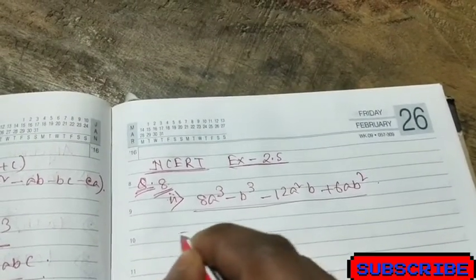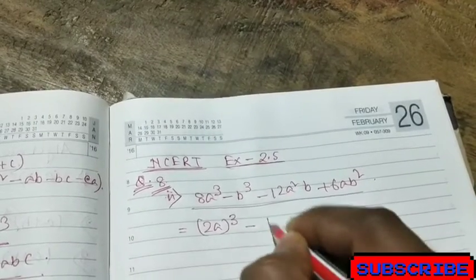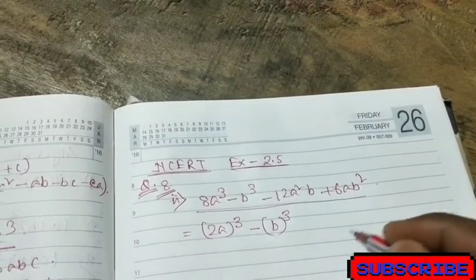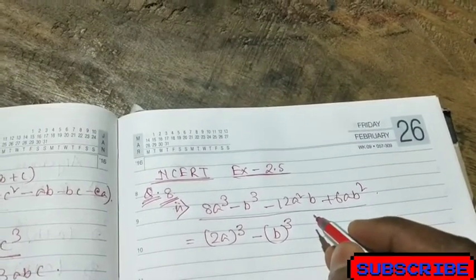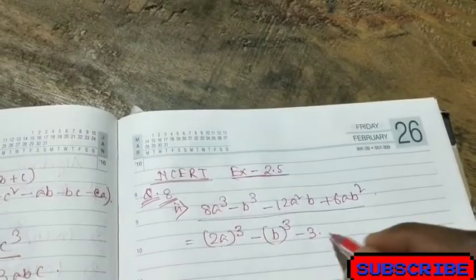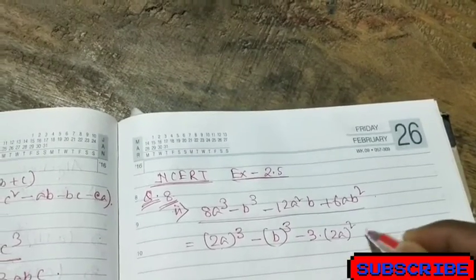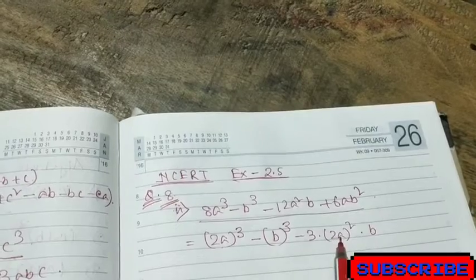So this we can write as 2a whole cube minus b whole cube. That's a cube minus b cube minus 3a square b, that is minus 3 into a means 2ab, so that means 3 into 2a whole square into b.